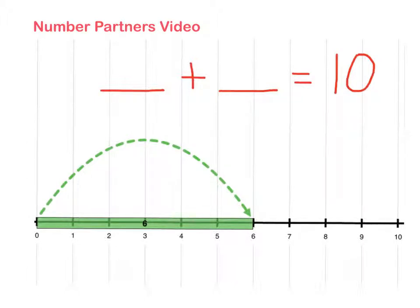Did you say six? Because when I look at this, it shows me that there are six on the number line already. So we need to write that as our first partner or addend. We'll write the number six.